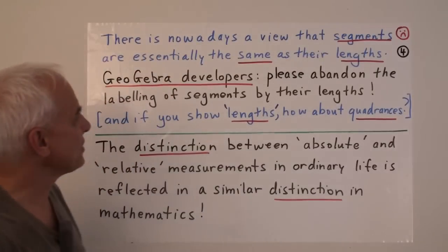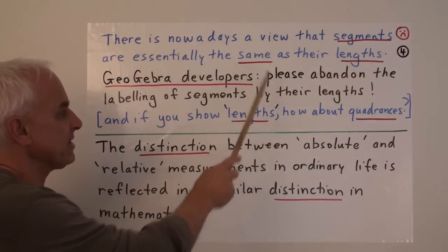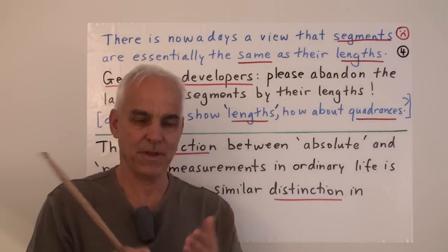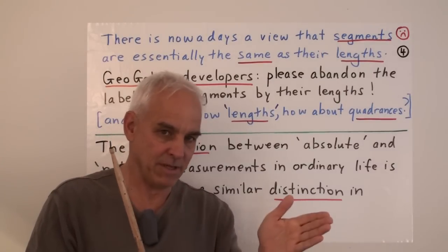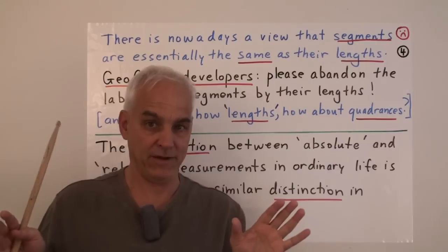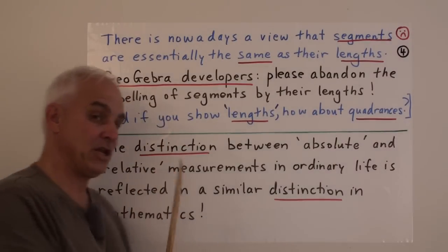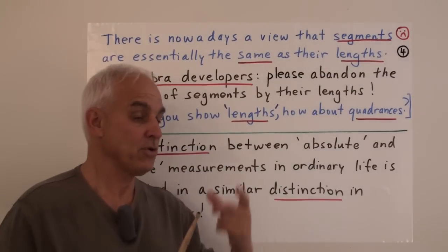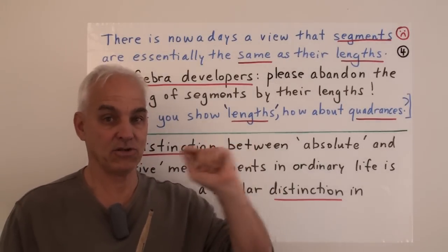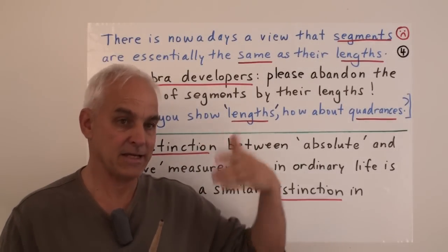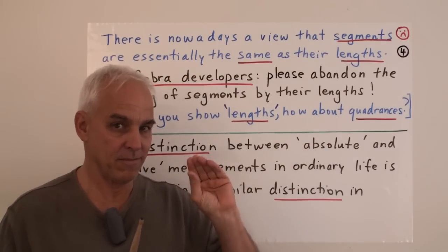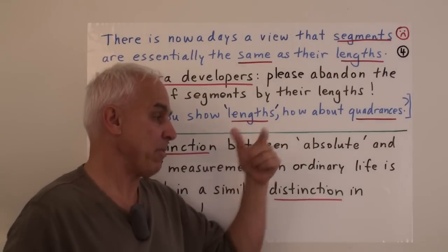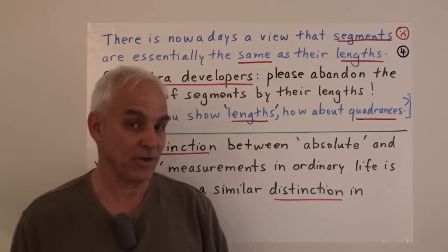Today there is a view that segments are essentially the same as their lengths, that these two notions are somehow intimately connected. What I'm trying to get you to realize is that segments and their lengths are quite different things. In particular, if there are any GeoGebra developers watching: please abandon the labeling of segments by their lengths. When you construct a segment in GeoGebra, it is not necessary to immediately see its length — that's a secondary thing. And if you're going to allow people to see lengths, you should probably also allow them to see quadrants too.